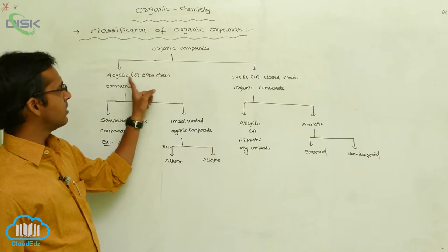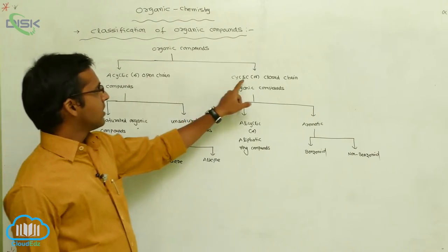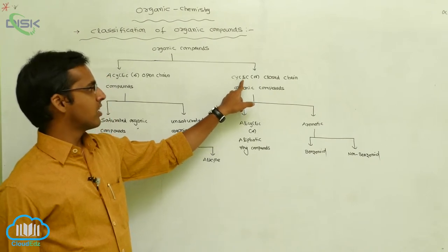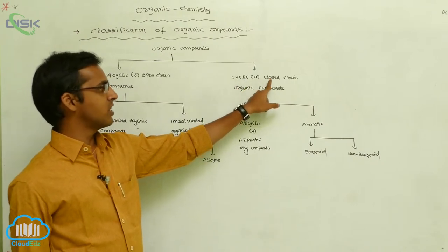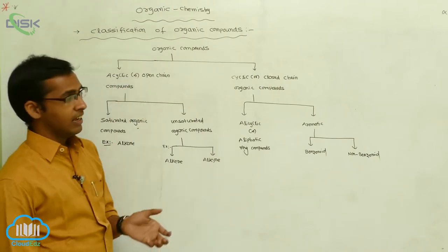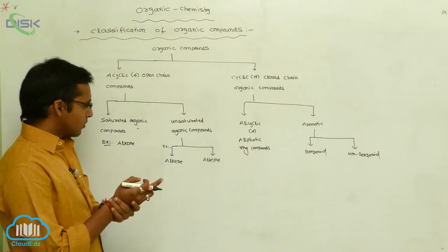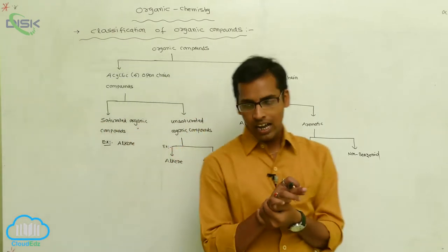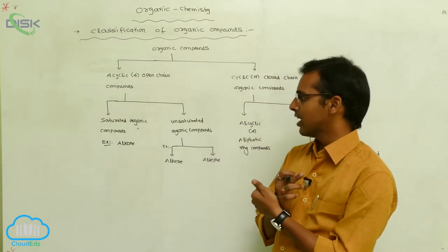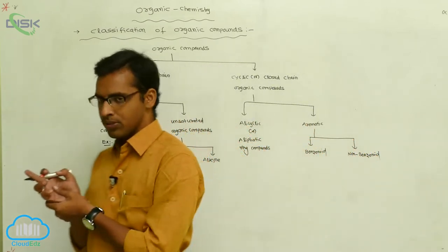Open chain means the compound contains a straight chain structure, and cyclic compound means it contains a closed ring structure. Acyclic or open chain compounds are classified into two types: saturated compounds and unsaturated organic compounds.